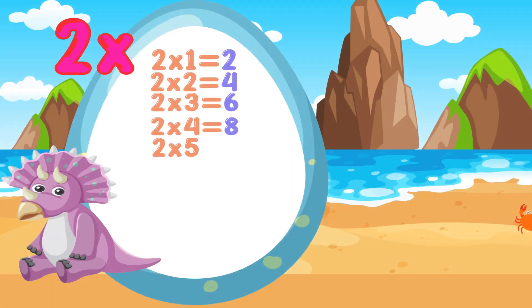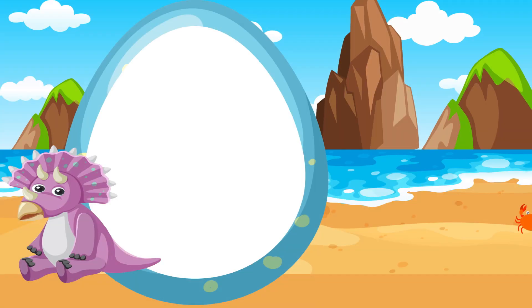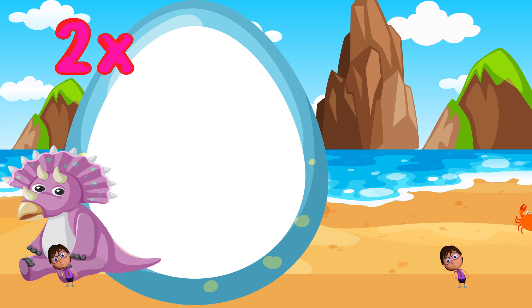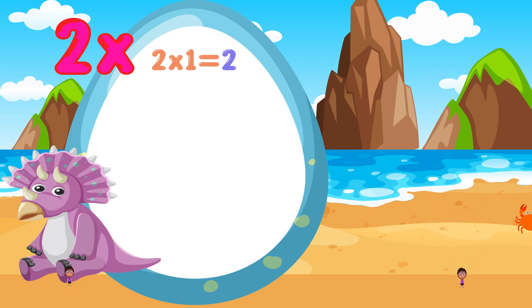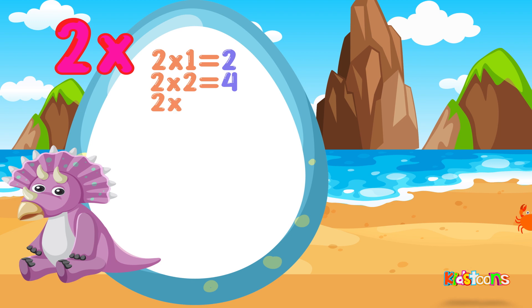So let's repeat it again. 2 times 1 is equal to 2. 2 times 2 is equal to 4. 2 times 3 is equal to 6. 2 times 4 is equal to 8.